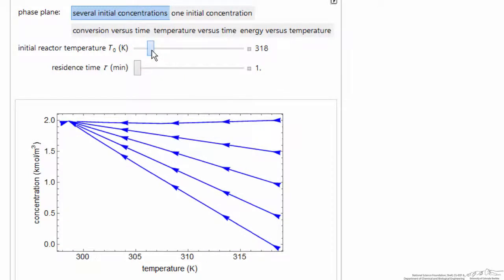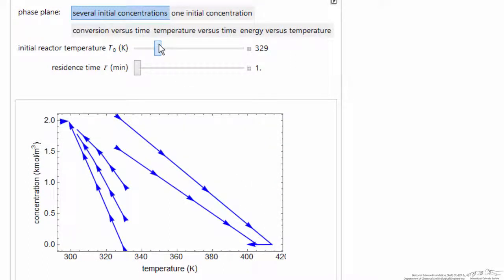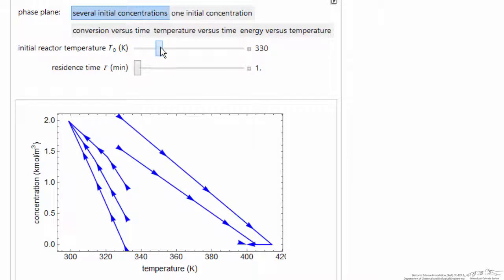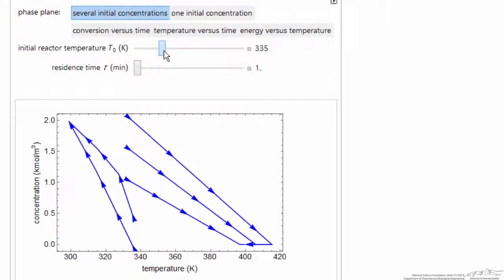If I raise the temperature, now notice we've reached a high enough temperature that we start at the high concentration. We go to the solution which has high temperature, low reactant concentration, namely high conversion. And you can see it's dependent on the temperature and concentration as to which conditions we end up with.